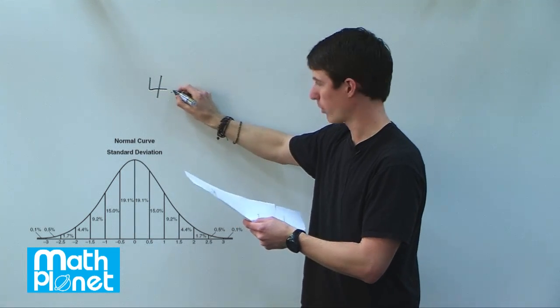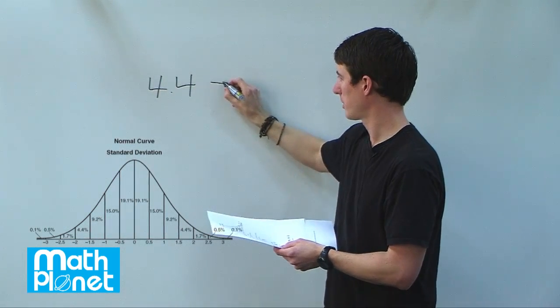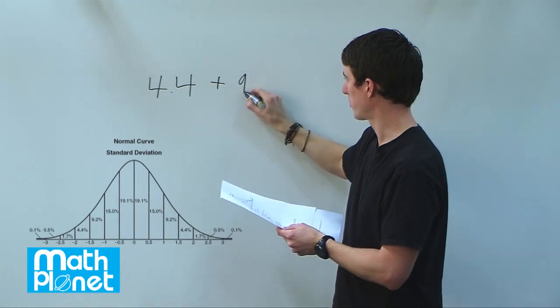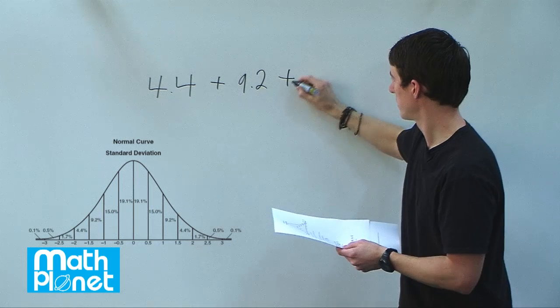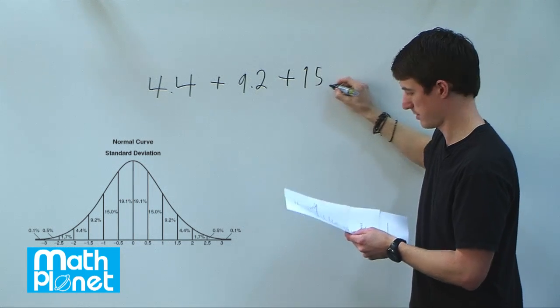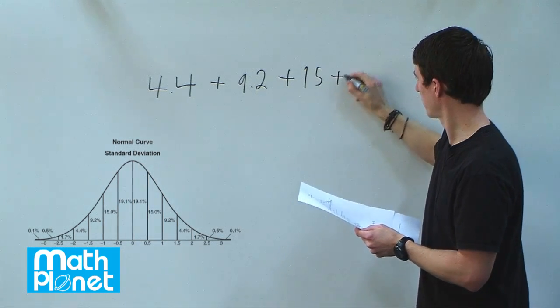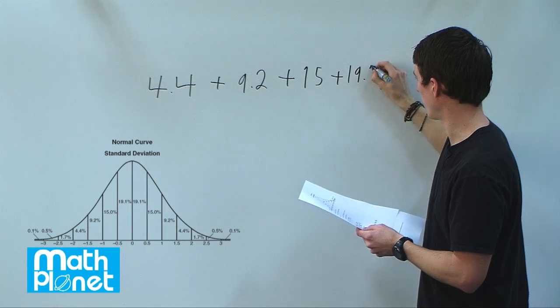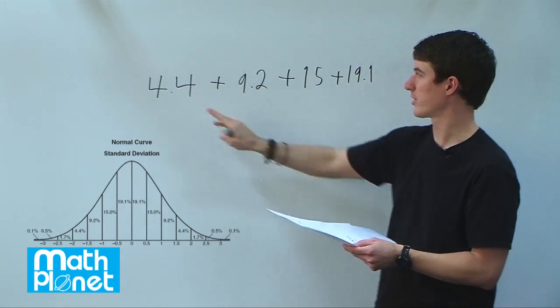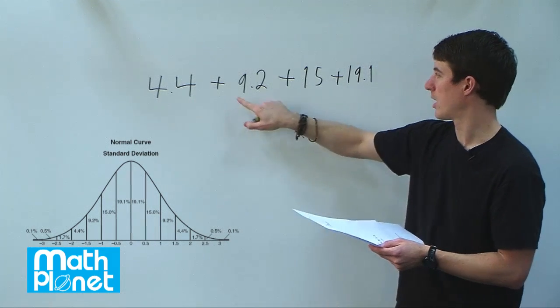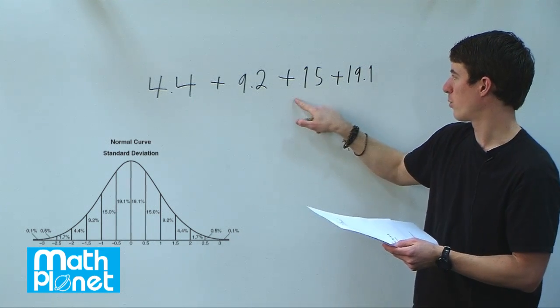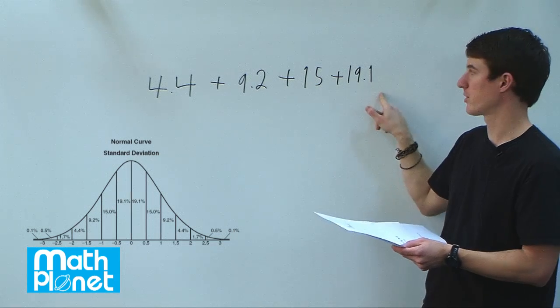We'll have 4.4 plus 9.2 plus 15 plus 19.1 percent. This is from two standard deviations away to one and a half, one and a half to one, one to one half, and then one half to zero.